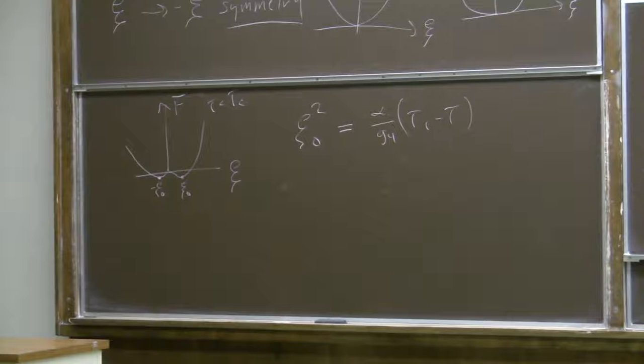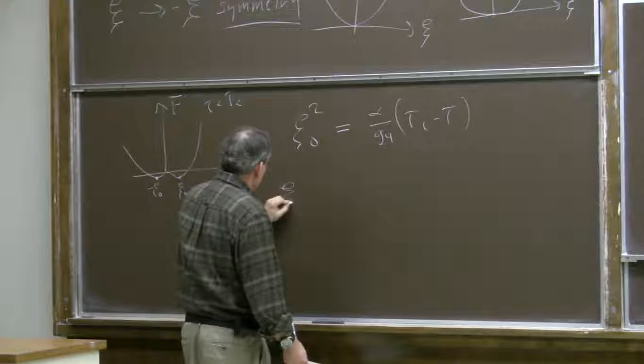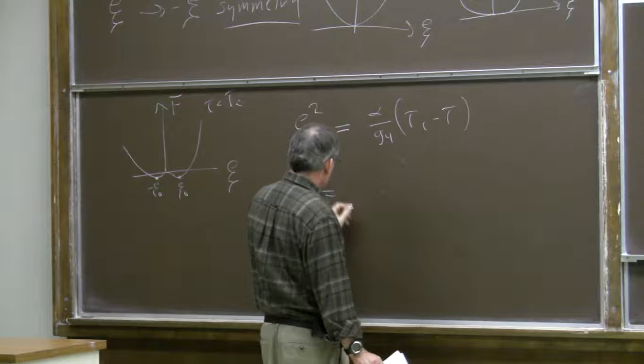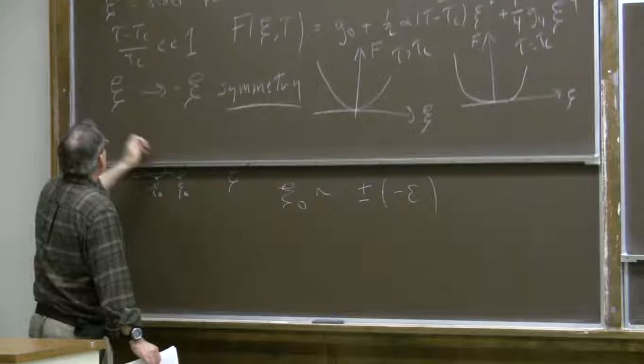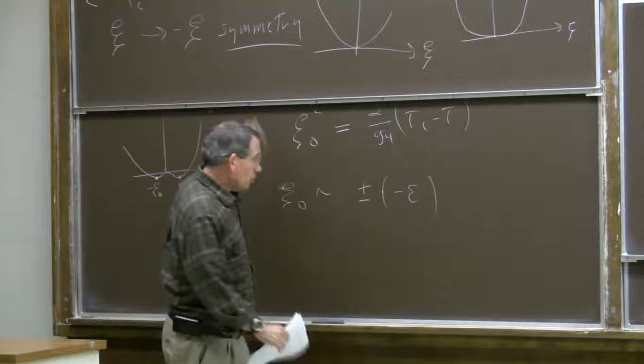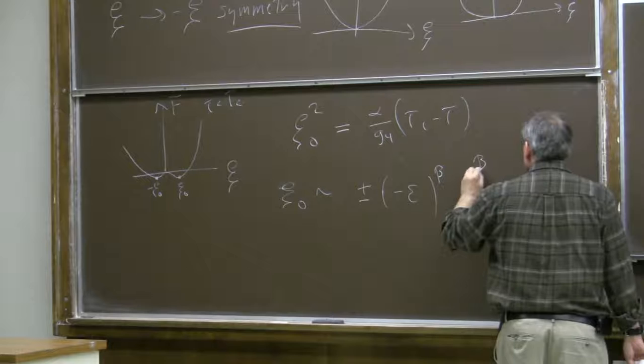Landau theory makes the prediction that the order parameter behaves like some constant times plus or minus, times (minus epsilon) to a power, where epsilon is the dimensionless deviation from critical temperature. This exponent is generally called beta, and according to Landau, beta should be equal to one-half.